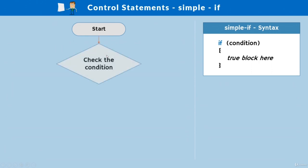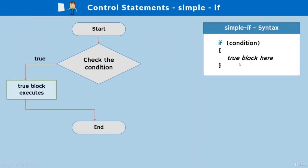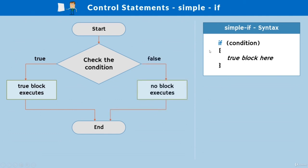In the flowchart: the interpreter checks the condition. If true, the true block executes, then it reaches the end of the if statement and continues. If the condition is false, no block executes — it jumps out of the block and goes to the next statement after the if. Let me demonstrate simple if by creating simpleif.js, printing an exam result assuming minimum pass marks is 35.